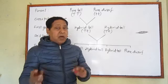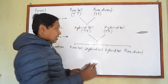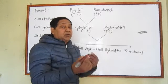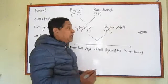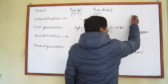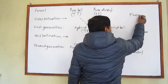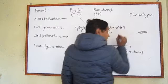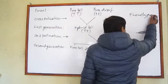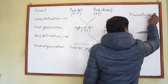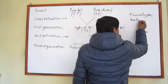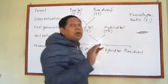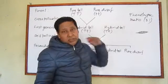Phenotype means the external appearance of an organism with regard to one or more characters. Phenotypically, the ratio he found in the second generation was 3:1 — that is, tall to dwarf is 3 to 1.